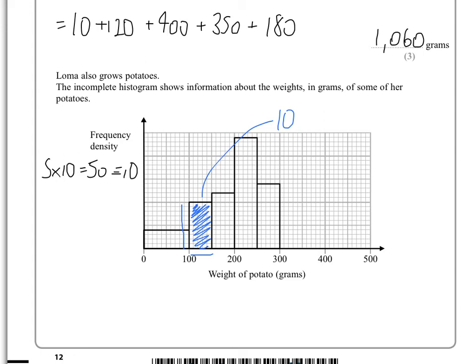What it's asking us in part B is how many potatoes had weights of less than 100 grams. So less than 100 grams is 10 times 4. So if 50 is equivalent to 10, how many would 40 be equivalent to? 40 would be equivalent to 40 over 50 times 10.